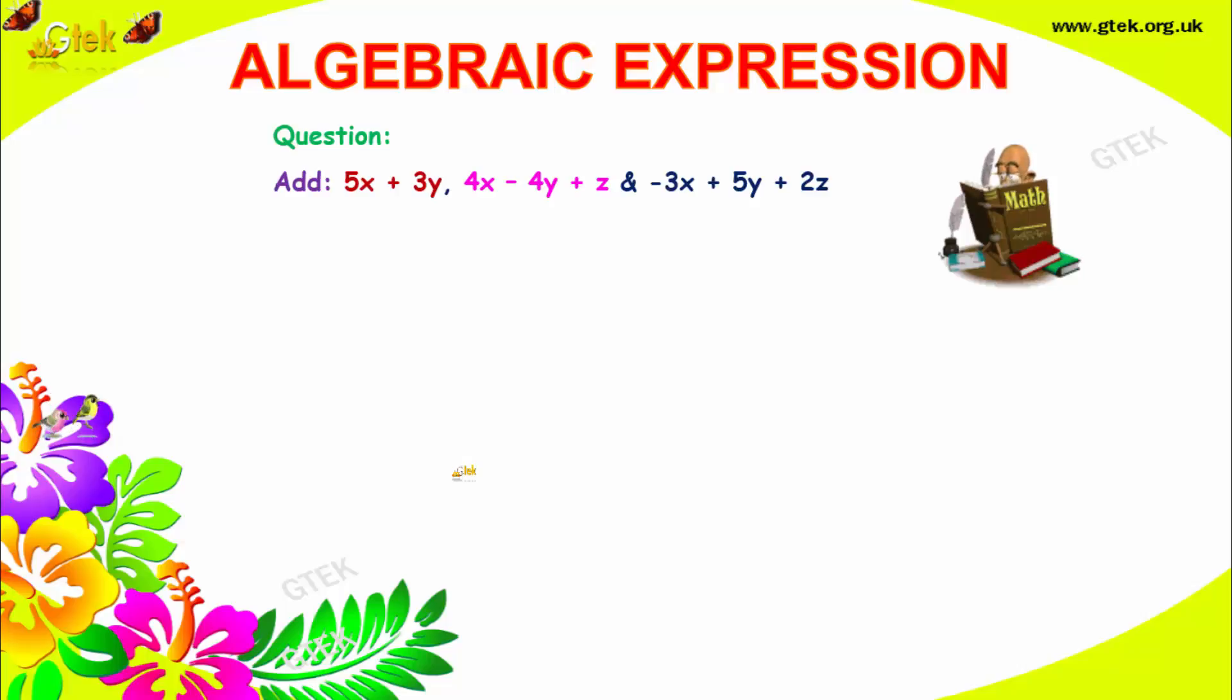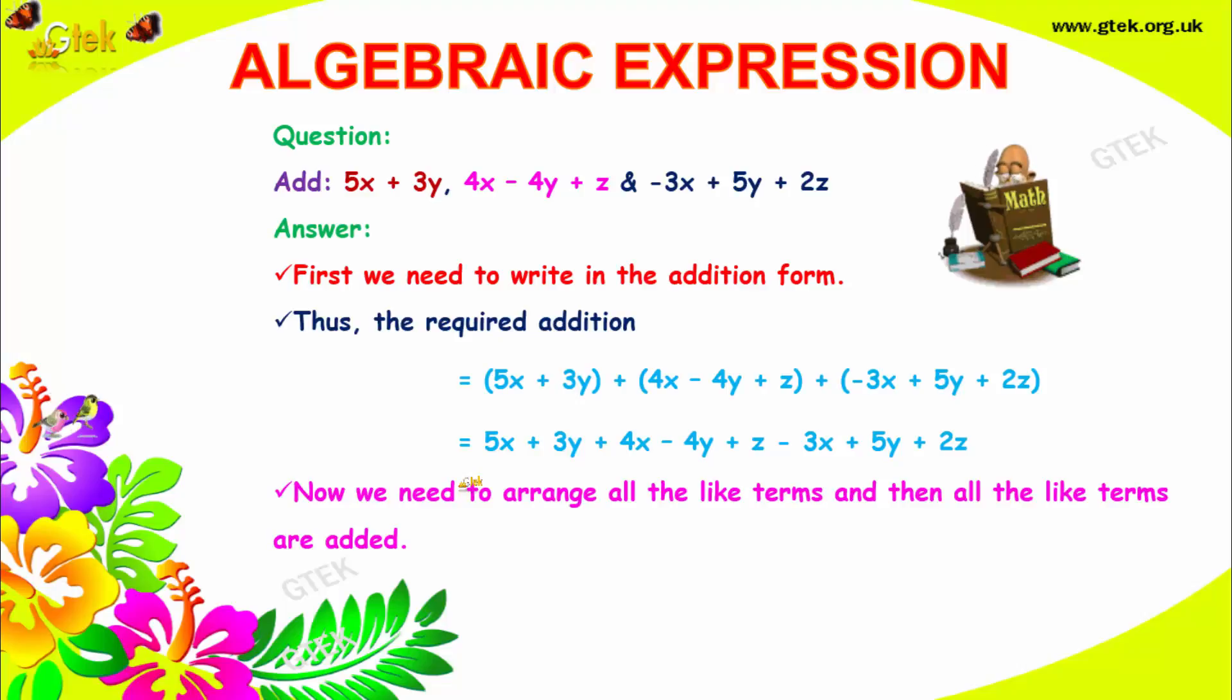We got another problem: 5x plus 3y, 4x minus 4y plus z, minus 3x plus 5y plus 2z. Let's see how we can solve it. First, we need to write in the addition form. This is another way of adding the expressions. We got 5x plus 3y, 4x minus 4y plus z, minus 3x plus 5y plus 2z.